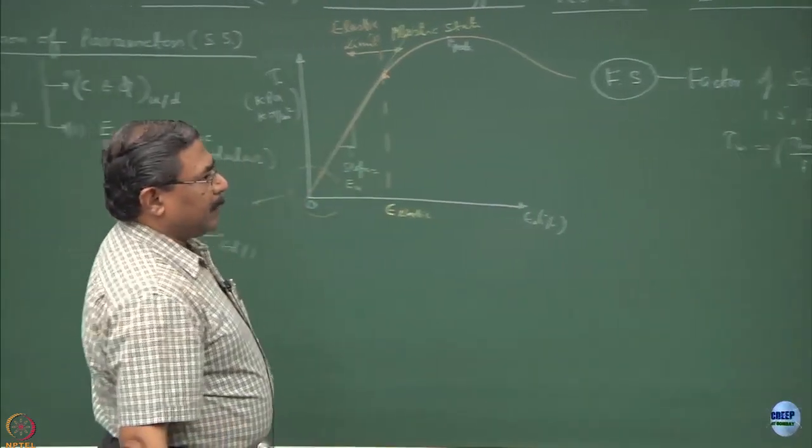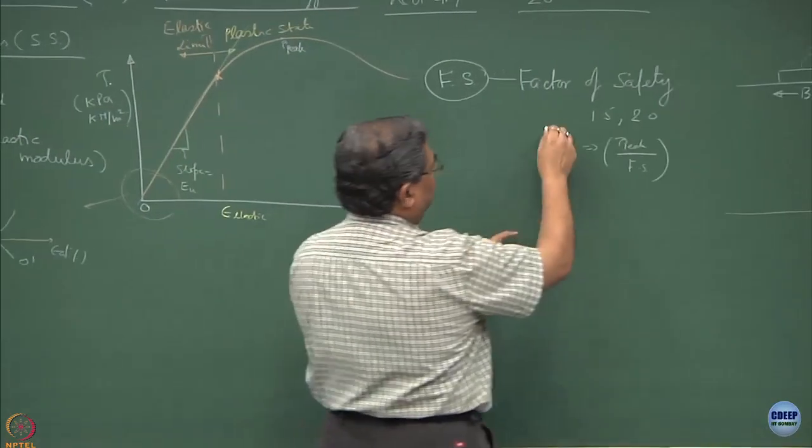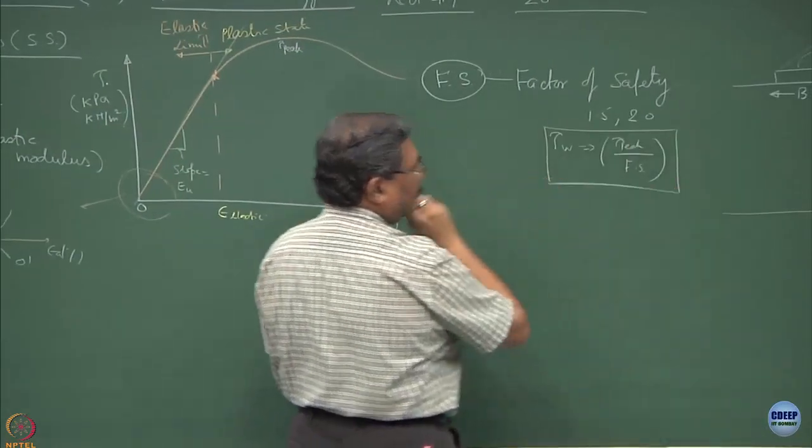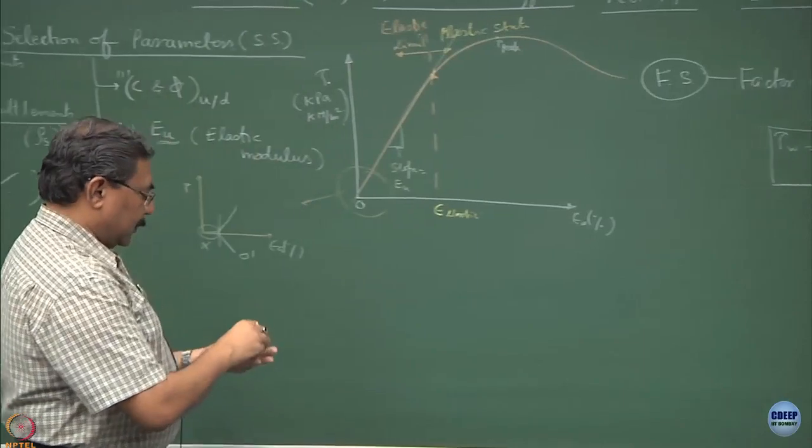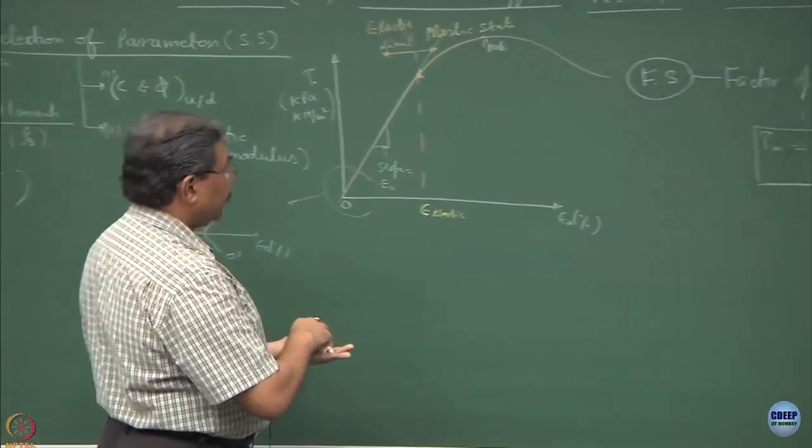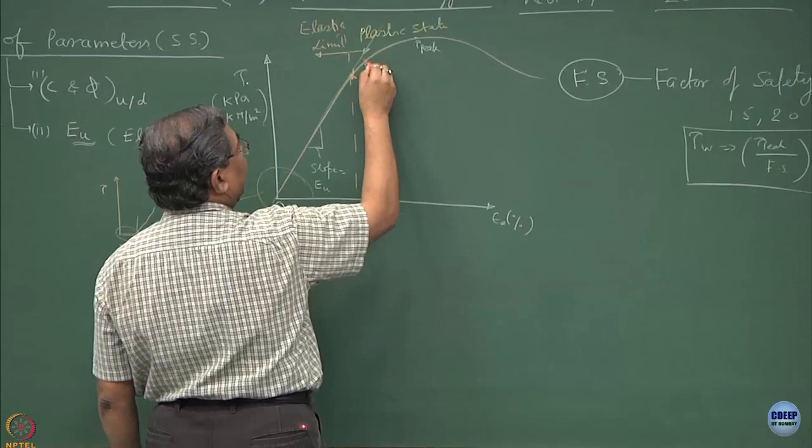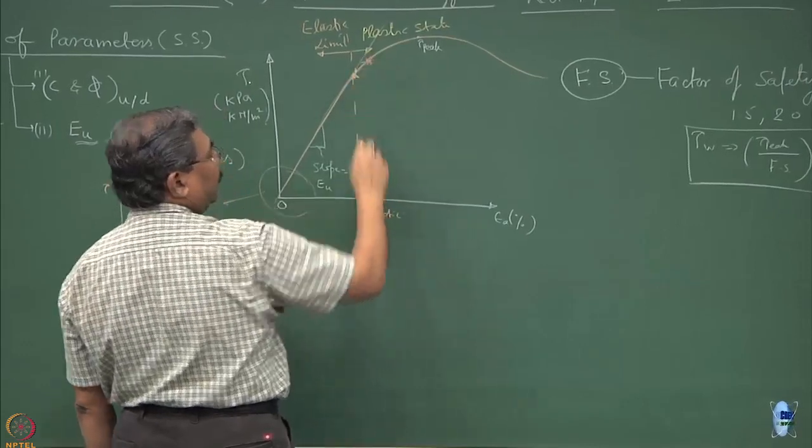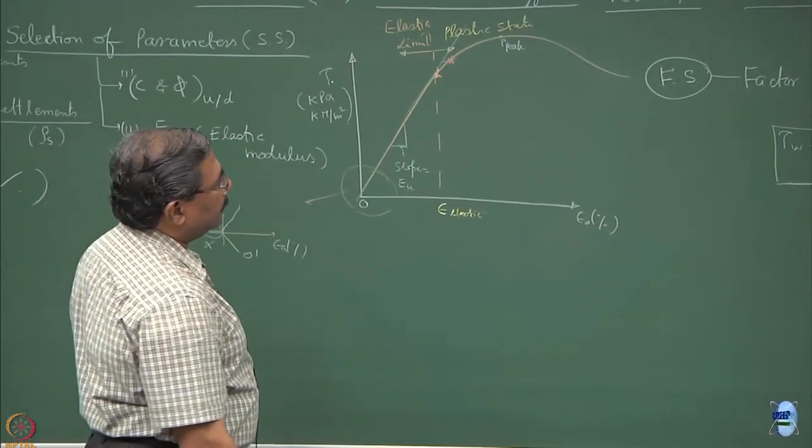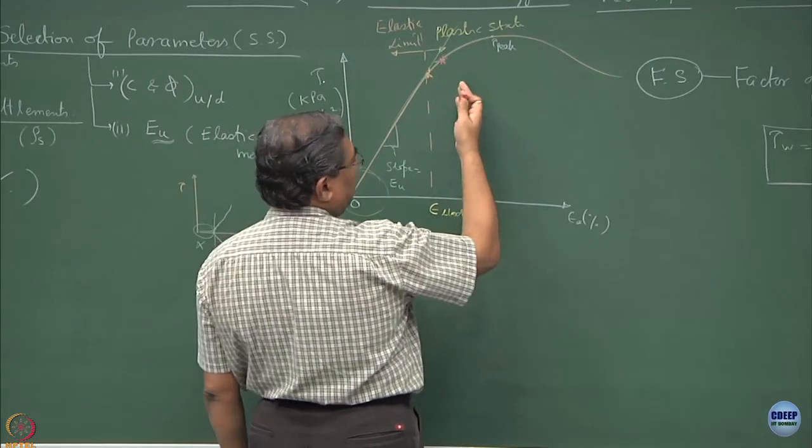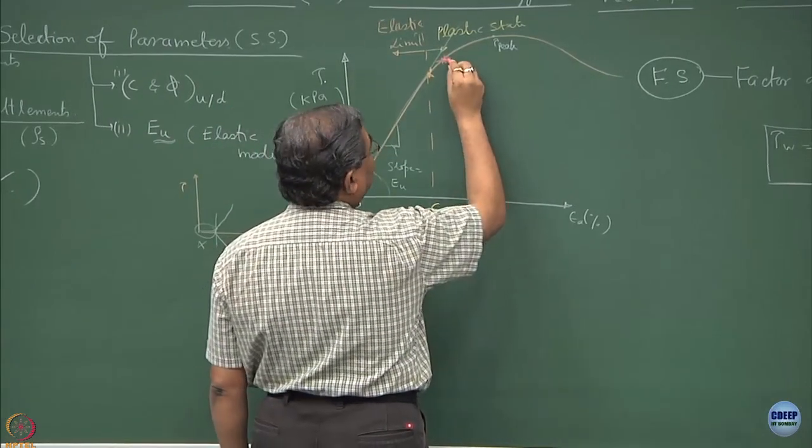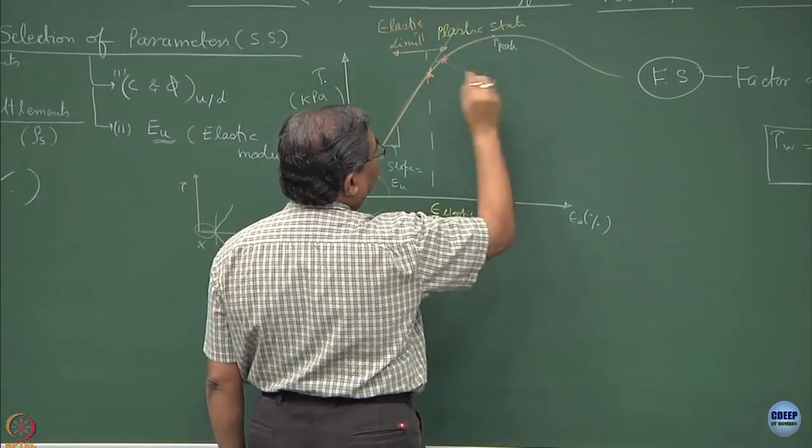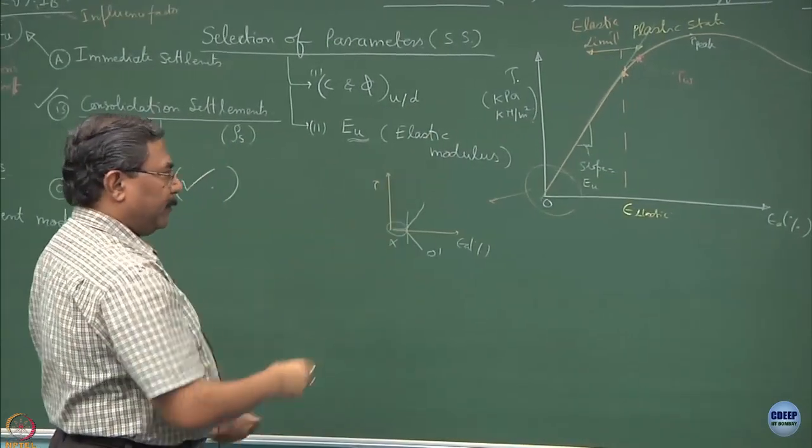This becomes the factor of safety. Tau working would be equal to tau peak divided by factor of safety. This becomes my stress of interest. I will mark this on the graph. This is the safe value of the shear stress which I am going to consider for my analysis, corresponding to tau_w by applying factor of safety.